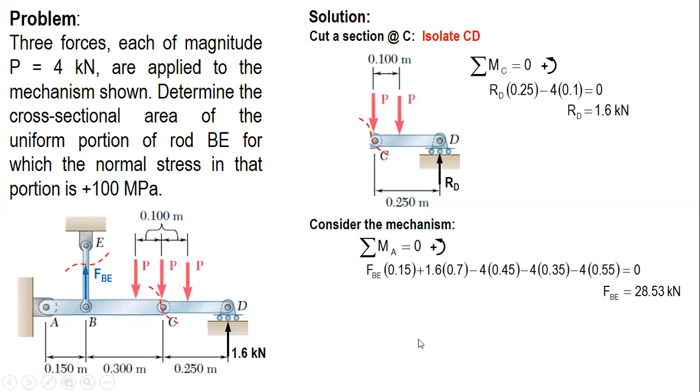Solving for the area, we use the formula stress equals force over area. The stress is 100 megapascals and P is FBE, so since the stress is in megapascals, we convert this one to newtons times 1000.